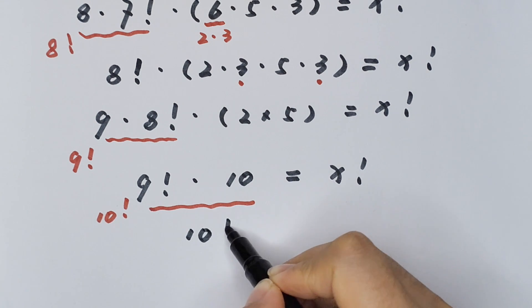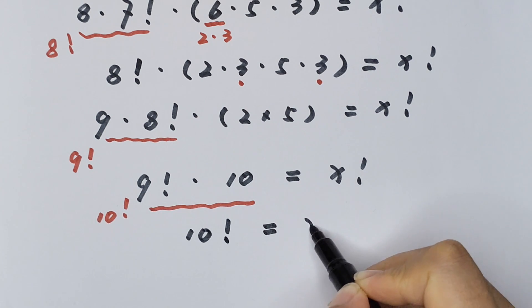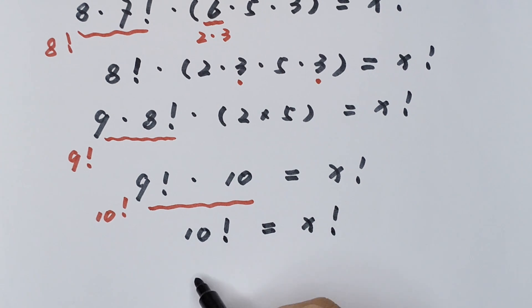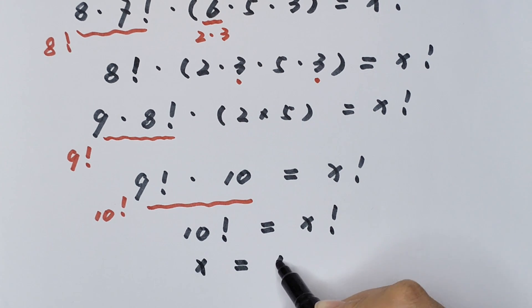10 factorial equals x factorial, so x equals 10.